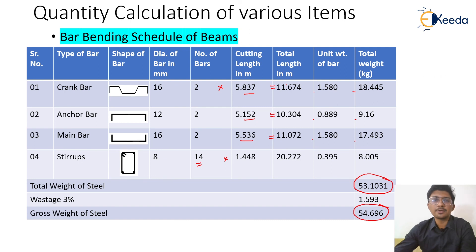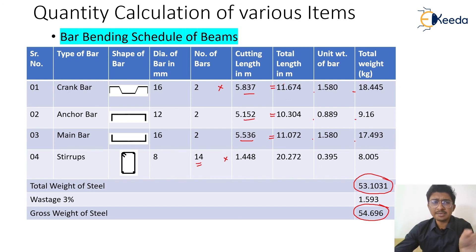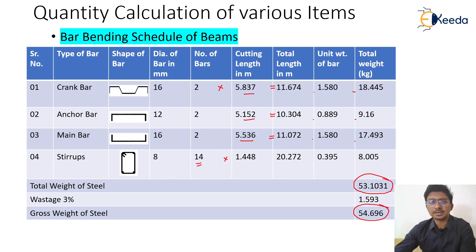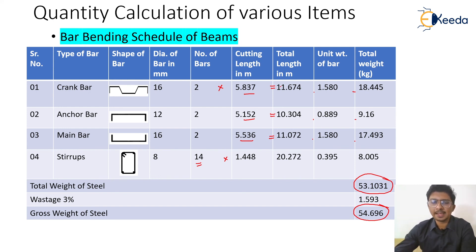This summary chart is the most important output — it shows the bar name, shape, numbers, unit weight, and everything needed. This page represents a bar bending schedule, which is what is typically created as an Excel sheet on site. With this, the complete reinforcement quantity calculation for the beam is done. Thank you.